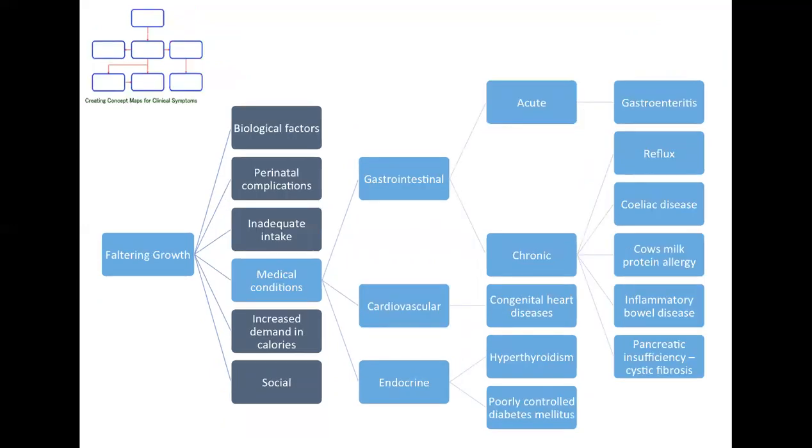Do they have an underlying medical condition that can lead to increased output or an increased metabolism? Here, I have split the medical condition by system. For example, gastrointestinal, cardiovascular, and endocrine.